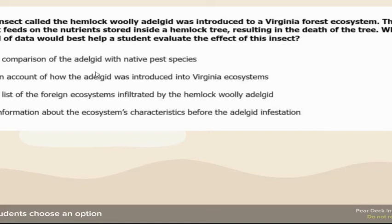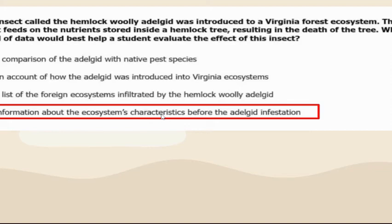An insect is introduced and feeds on nutrients in a hemlock tree, killing the tree. Which kind of data would help a student evaluate the effect of this insect? The answer is information about the ecosystem's characteristics before the infestation. You want to compare the ecosystem before and after whatever was introduced to see what effect that introduction had.